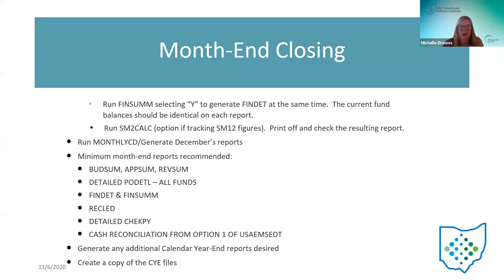Running the SM2 calc: districts can run this ahead of time with the calc option to calculate the SM2 and review it. If they don't run it, that's okay — when they run adjust at the end of the month, it will calculate the SM2 and plug those figures into the SM2 main program automatically. Monthly CD: make sure they're running monthly CD to generate their December reports and going out there to look at it after it's generated to make sure everything looks good. This is just a list of the minimum reports recommended; if they have any additional calendar year-end reports they want to run, they can.